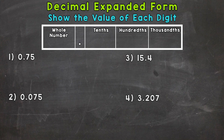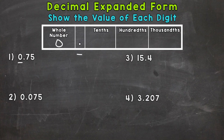Number one is 75 hundredths. There's a place value chart at the top of your screen. I'm going to place that number in the chart so we can really break it down and see what the value of each digit is going to be. We start with a zero, showing us we don't have a whole number. Then we have a seven in the tenths place and a five in the hundredths place. So we can clearly see that we have seven tenths and five hundredths.